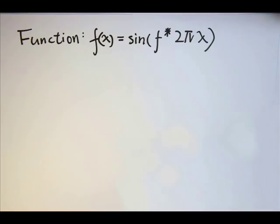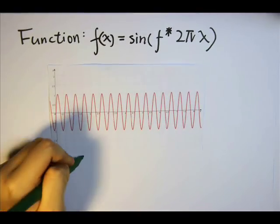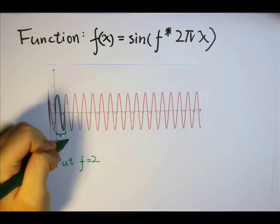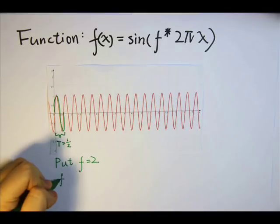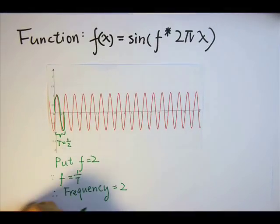This is the function representing these types of graphs. To grasp the idea of this sine graph, we shall consider the following example. When we put f equals to 2, we obtain this graph. This period of time is 0.5 seconds, so therefore the frequency of this wave is 1 over 0.5 seconds, which is equal to 2 hertz.